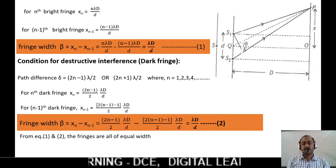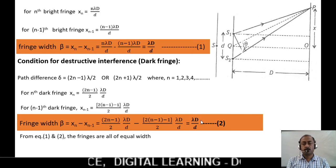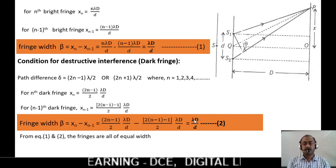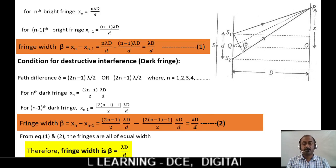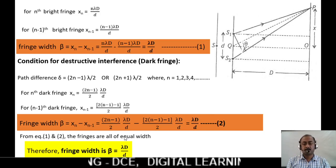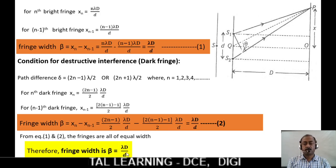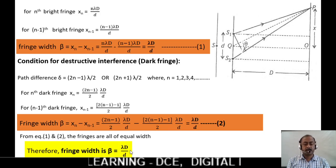From equations 1 and 2, these two equations are similar. Hence, the fringes are all of equal width. Therefore, the fringe width can be written as β = λD/d, where λ is the wavelength, D is the distance from slits to screen, and d is the slit separation.